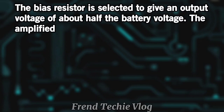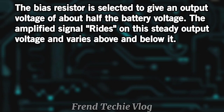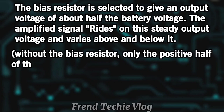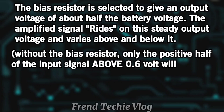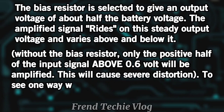This represents the DC bias level. The output signal is inverted. The bias resistor is selected to give an output voltage of about half the battery voltage. The amplified signal rides on this steady output voltage and varies above and below it. Without the bias resistor, only the positive half of the input signal above 0.6 volts will be amplified, causing severe distortion.